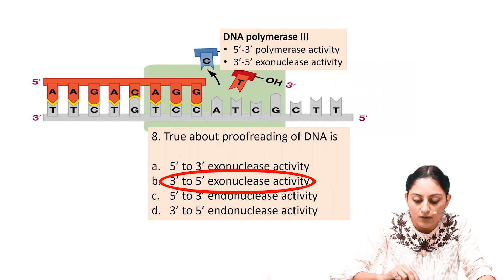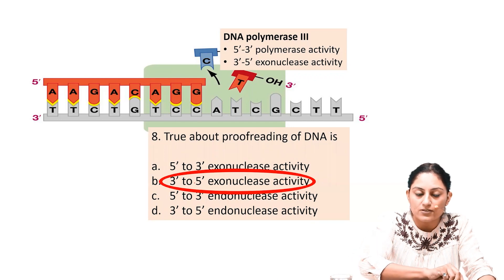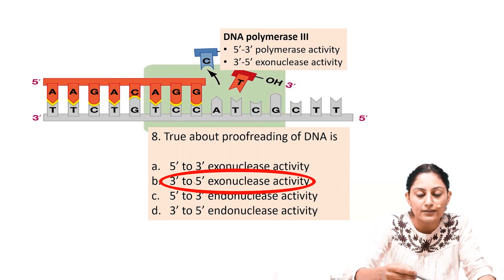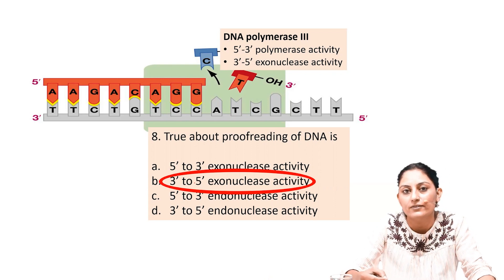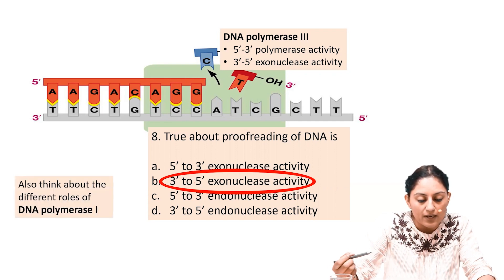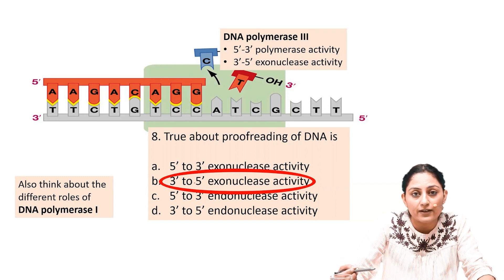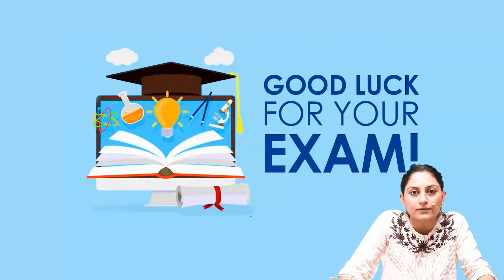The right answer is 3' to 5' exonuclease activity — not 5' to 3' exonuclease, and not endonuclease, since the wrong nucleotide is removed from the end, not from the middle of the chain. As a bonus, consider the different roles of DNA polymerase 1. Thank you everyone, and I wish you all the best for your exams.